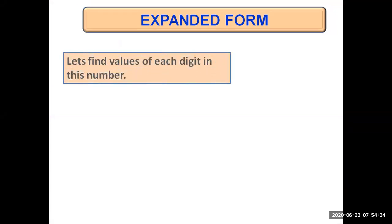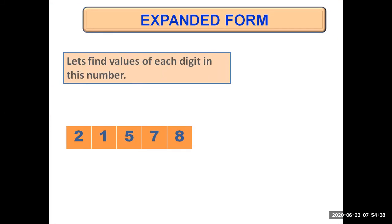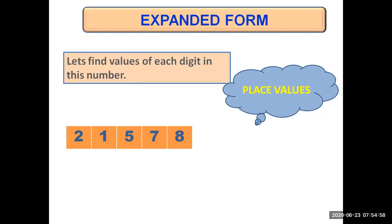We have learned about expanded form of five digit numbers previously. What we did was we first find the values of each digit in the number. For example, we have a number on the screen: 21578. Let's find the value of each of the digits in this number. For that, we will first find their place values. Remember, always start writing place values from the rightmost digit, that is ones.